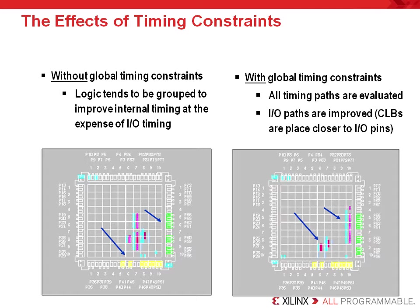When timing constraints are used, the placement and routing solution can be very different. In this case, pin placement was almost identical to the original implementation without timing constraints. This could have been assured if the user had placed pin assignments on the design. However, the placement of logic is very different, which gives you assurance that the design is going to have greater reliability and greater speed. The net result of using timing constraints is a faster-performing design at the expense of a slightly longer implementation time.